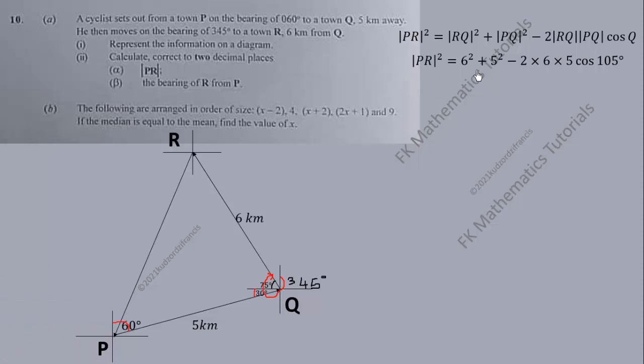We do the substitution and we obtain this. So we have to simplify now. 6 squared is 36, 5 squared is 25, then the cosine of 105 degrees. With your calculator you get negative 0.25882.